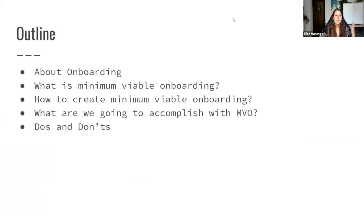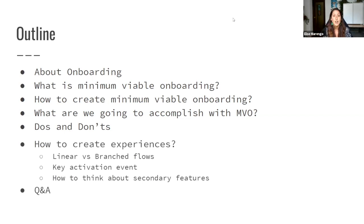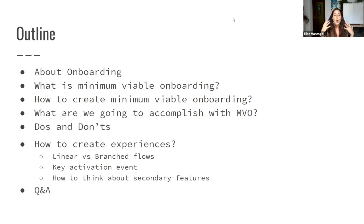First, we're going to talk about onboarding as a general concept, what Minimal Viable Onboarding is and how it fits into onboarding as a whole, how to actually create it, and what we're going to accomplish with it. A couple of do's and don'ts. Then in the second half we'll jump into the UserPilot app — using the Chrome extension and web app to build the first steps of a Minimal Viable Onboarding: linear or branched flow, key activation metrics, and secondary features. It should be about 25% concepts, 75% building. We'll leave time for Q&A.